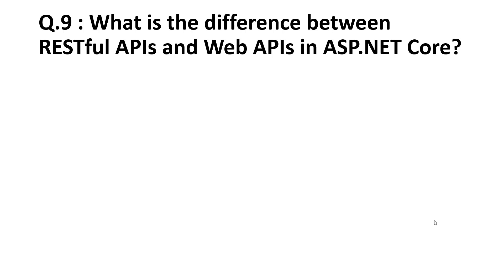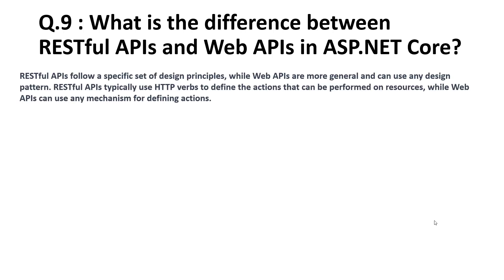The ninth question is: what is the difference between a RESTful API and a Web API? RESTful APIs follow a specific set of design patterns, like designing endpoints in a RESTful style. Web APIs are more general and can use any design pattern — not just focused on endpoints, but also on controllers, action methods, etc. RESTful APIs typically use HTTP verbs to define actions on resources, while Web APIs can use any mechanism for defining actions.